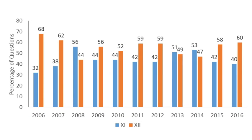First of all, you should understand the question distribution from the 11th standard book and 12th standard book — both are very important. 11th is the basis for 12th. When you see the statistical analysis, questions from the 12th standard book are more than from the 11th standard book in chemistry. In 2006, 32% of questions came from 11th standard whereas 68% came from 12th standard.